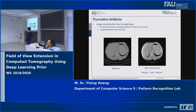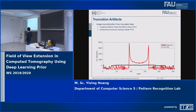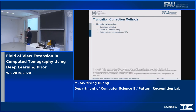Image reconstruction from truncated data using classic FBP reconstruction will suffer from artifacts. Here is the reference image, and here is the FBP reconstruction — we can clearly observe the FOV boundary. The anatomical structures outside the FOV are missing, and the intensity values inside the FOV are much larger and brighter than the reference. We call these cupping artifacts, because if we plot a line profile, the intensities look like a cup.